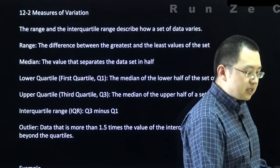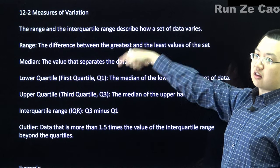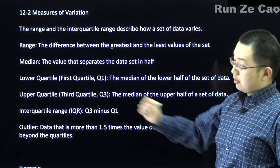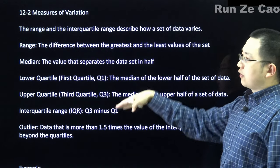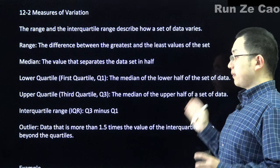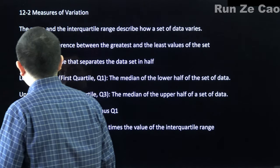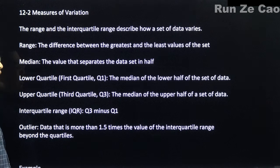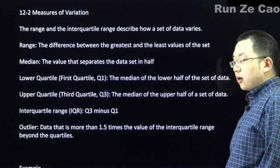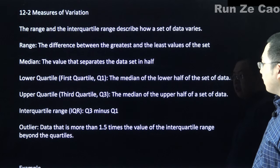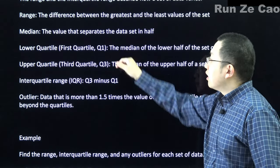Measures of variation: the range and the interquartile range describe how a set of data varies. The range is the difference from the biggest to the smallest values. The median separates the data set in half when ordered; with an even number of data points, take the average of the middle two. Q1 is the median of the lower half, Q3 is the median of the upper half, and the interquartile range (IQR) is Q3 minus Q1.